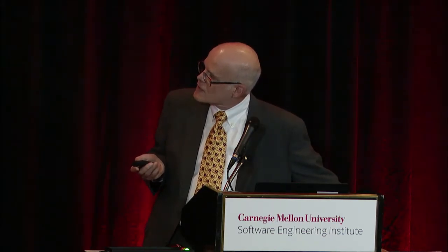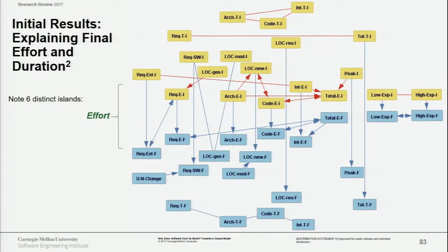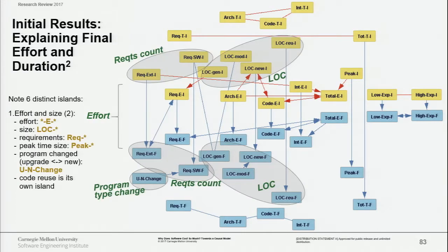Looking at this from a different perspective, the variables in the center horizontally, from left to right, mostly deal with effort. Requirements and code tend to have more statistically significant causal effects on total effort than does time spent in architecture or time spent in integration and test. I think that actually makes a lot of sense, and I can explain more at the poster session.